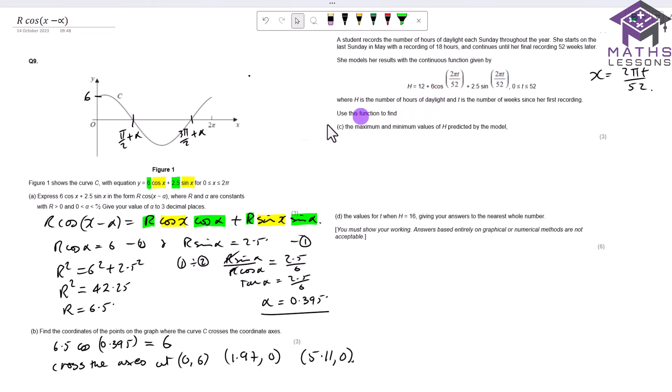So to find the max and minimum values, effectively if we have h equals 12 plus 6 cos 2 pi t over 52 plus 2.5 sin 2 pi t over 52, if we think of this value here as our x, then effectively what we've got is h equals 12 plus 6.5 cos 2 pi t over 52 minus that alpha 0.395. So the max is when the cos curve equals 1, so therefore 6.5 added on to 12 is going to be 18.5, and the min will be when we take away the 6.5 from 12, so therefore the min equals 5.5.